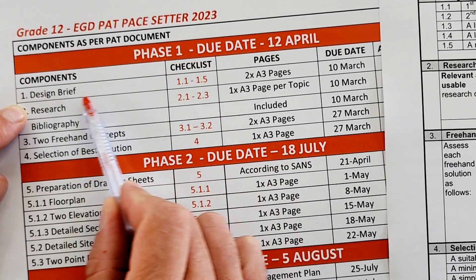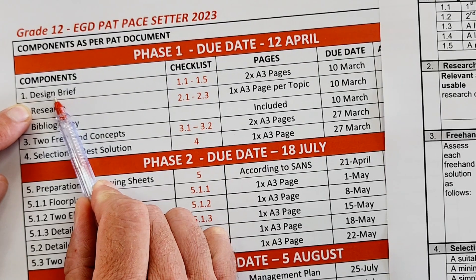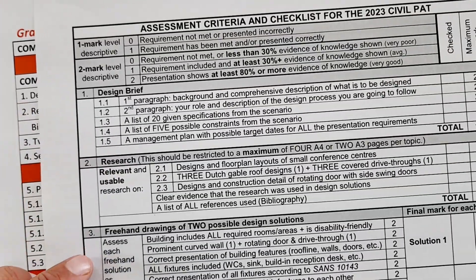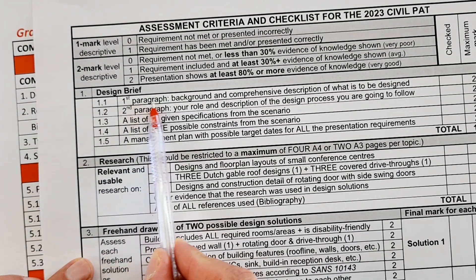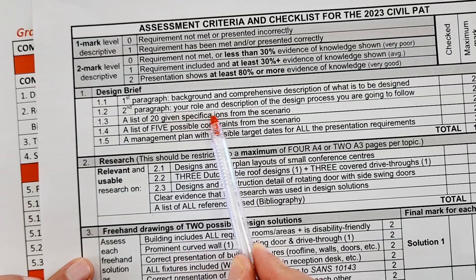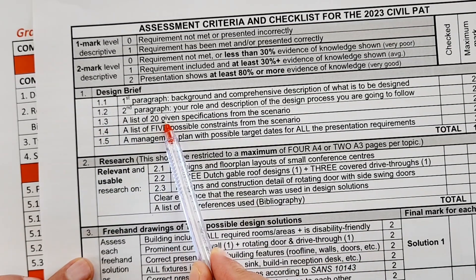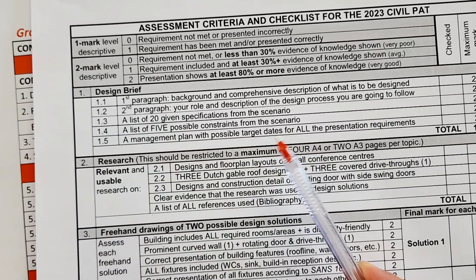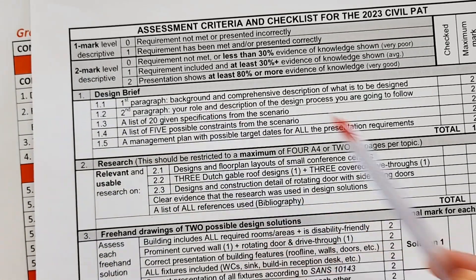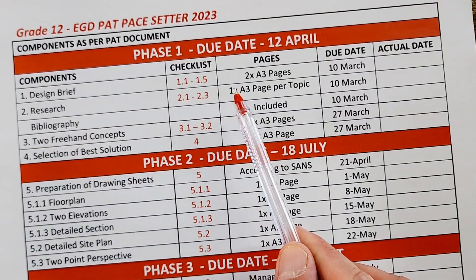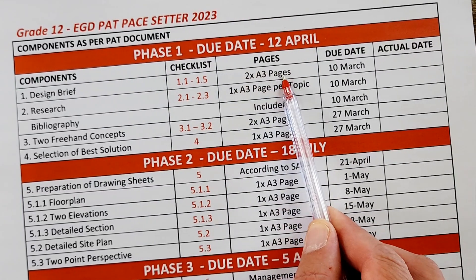The first component in Phase 1 is the design brief. The design brief constitutes five points in the checklist: 1.1 to 1.5. Going to the checklist, you can see: 1.1 is the first paragraph — background and comprehensive description of what is to be designed; 1.2 is your role within this process; 1.3 is the list of specifications; 1.4 is possible constraints; and 1.5 is the management plan. This tells you exactly what you need to do for the design brief, due by the 10th of March.